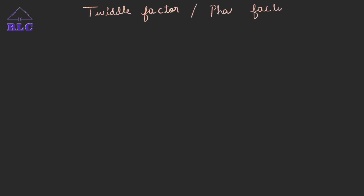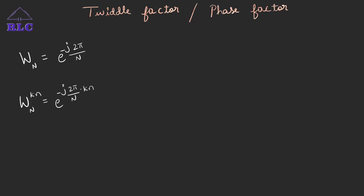Next, let us define the twiddle factor, also called the phase factor. The twiddle factor for an N-point DFT is W_N equals e to the power minus j 2 pi by N, into kn. Similarly, W_N to the power of minus kn equals e to the power minus j 2 pi by N into kn, which can be written as e to the power plus j 2 pi by N.